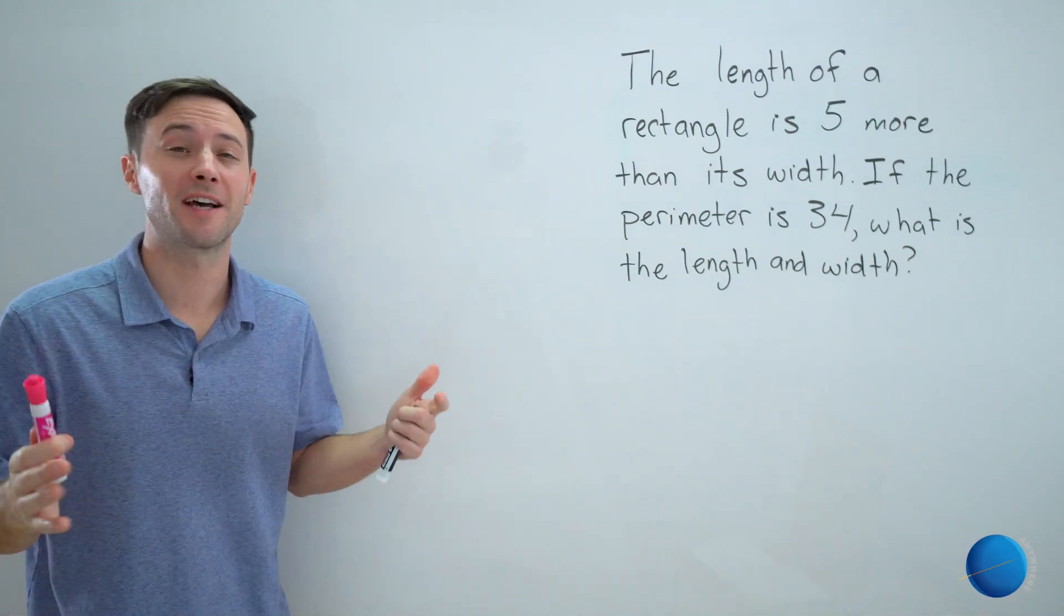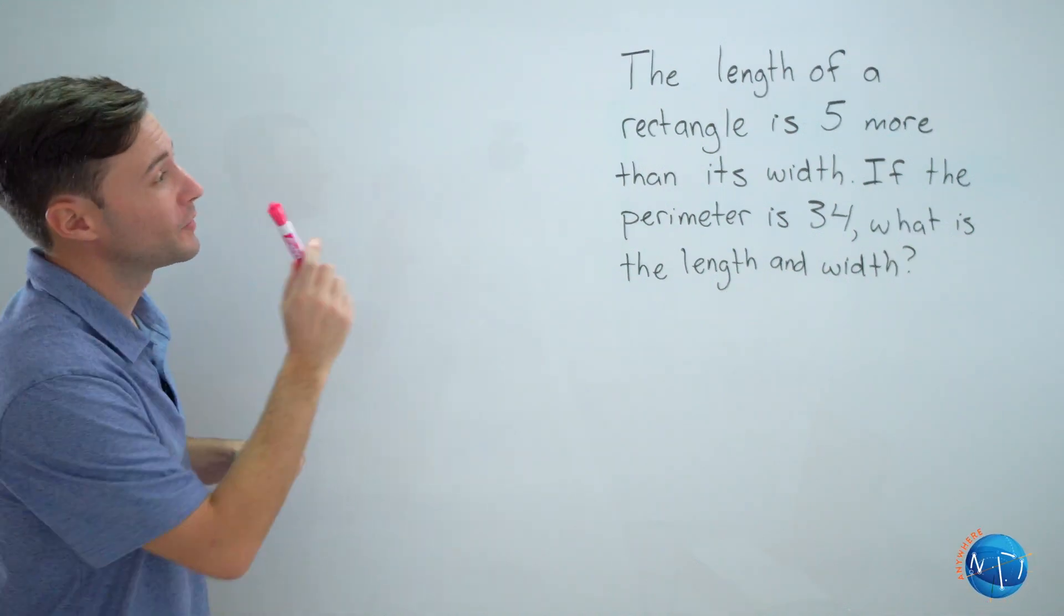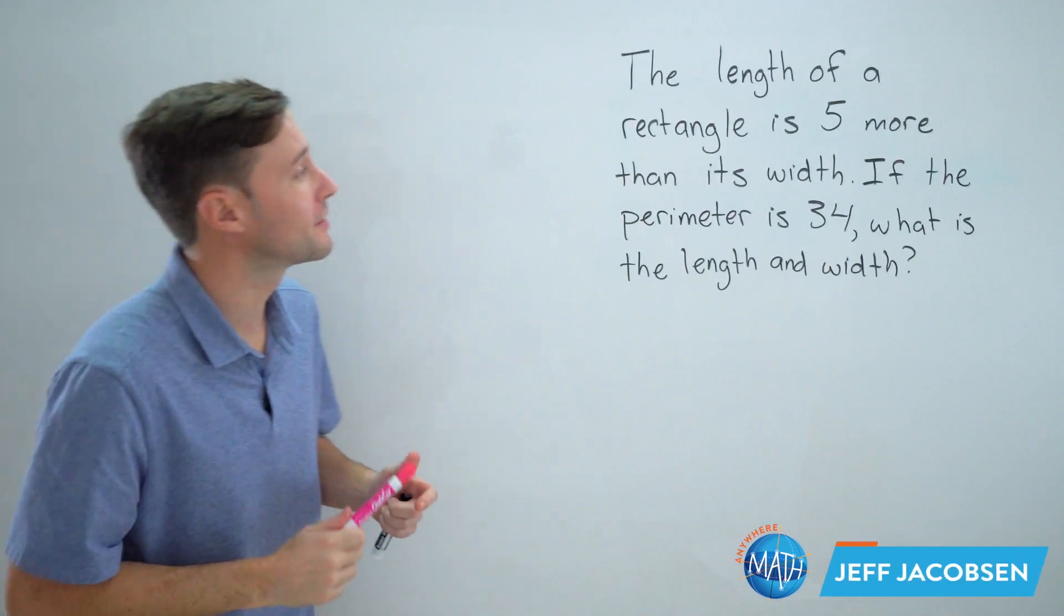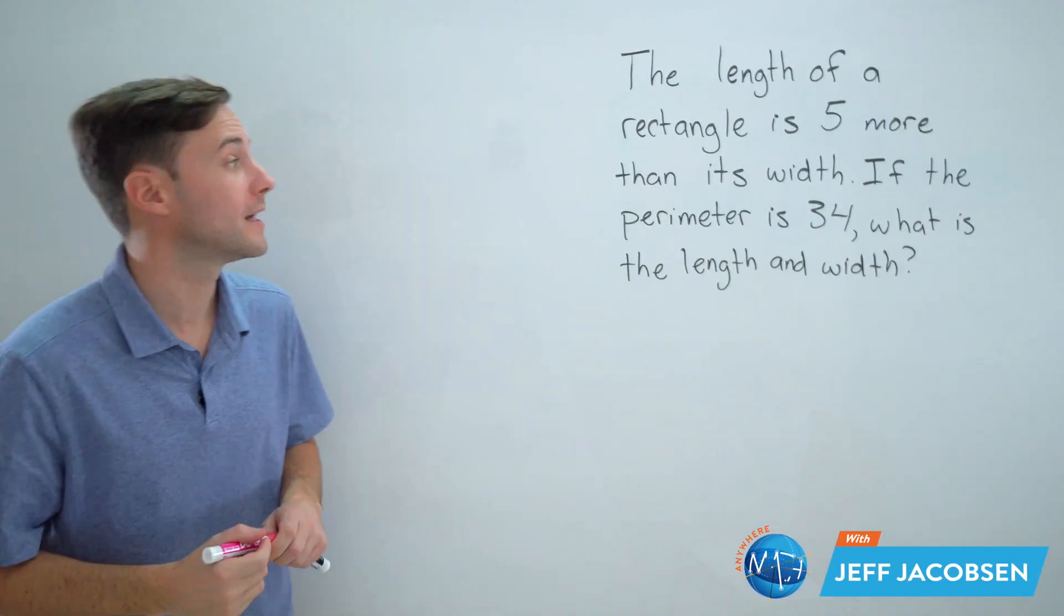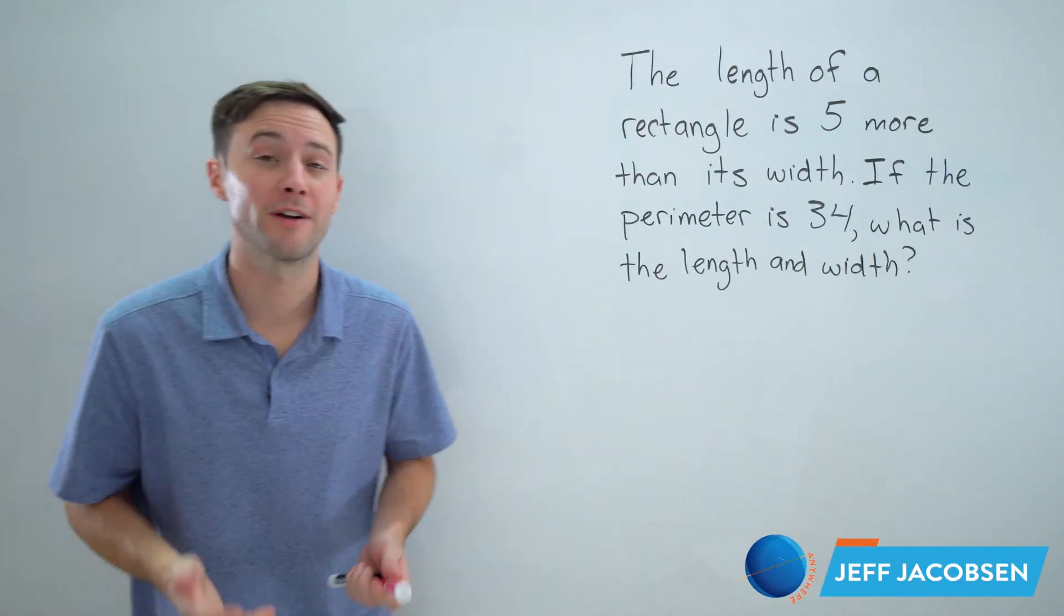Alright, here's an extension. We are still studying two-step equations. We've got a word problem here. It says the length of a rectangle is five more than its width. If the perimeter is 34, what is the length and width?